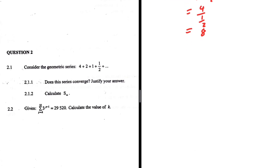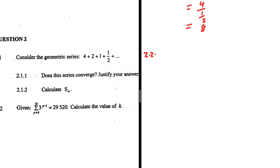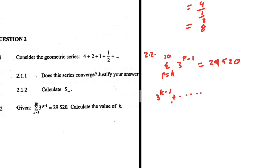Now 2.2. We're given sigma notation and we need to calculate the value of k. The sigma notation runs from p equals k to 10, where the formula is 3 to the power p minus 1, and this all equals 29520. The first term is 3 to the power k minus 1, and the last term is 3 to the power 10.